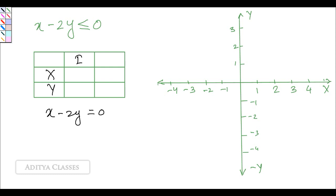Let's put x equals zero. This makes it zero minus 2y equals zero, making it minus 2y equals zero, so y equals zero divided by minus two, which equals zero. When we put x equals zero, y comes as zero.